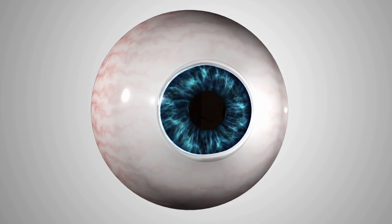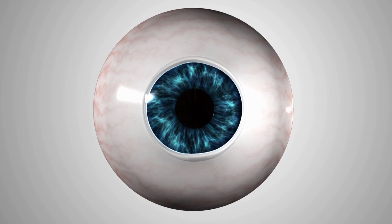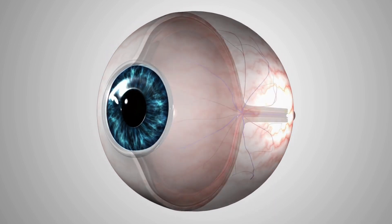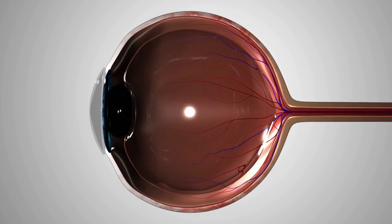Our eyes are complex organs that allow us to see the world around us. The basic function of the eye is to gather light and convert it into electrical signals that are sent to the brain, where they are interpreted as images.